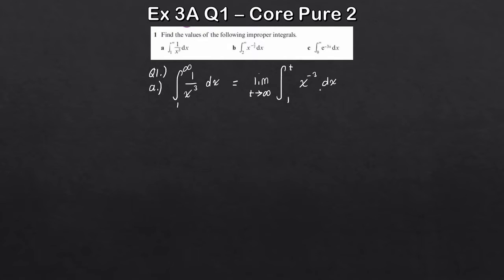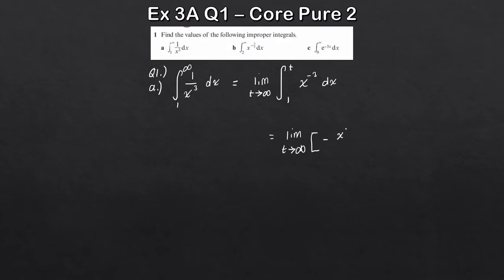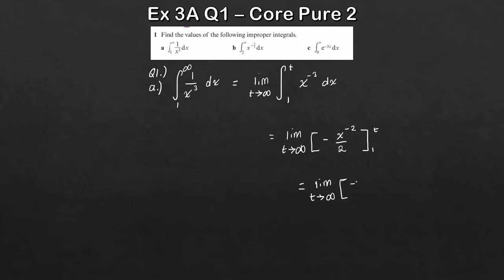All we need to do is perform this integral like normal — add 1 to the power, divide by the new power. We sub in the limits and then consider it as t tends to infinity. That gives us the limit as t tends to infinity of x to the minus 2 over minus 2, between 1 and t. Substituting in, we get minus t to the minus 2 over 2, minus 1 to the minus 2 over 2.